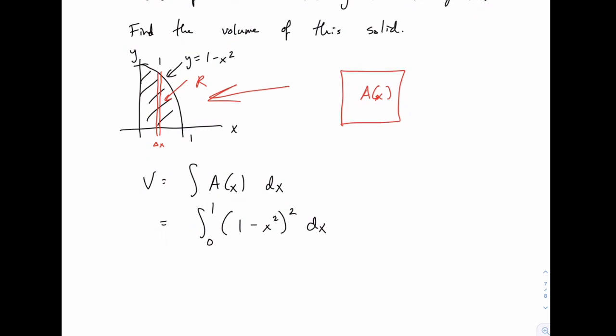So you multiply this out and get 1 - 2x² + x⁴. Integrating is really straightforward, so I won't show the details. What you should get is 8/15. You can practice that and see if you end up with the same answer.